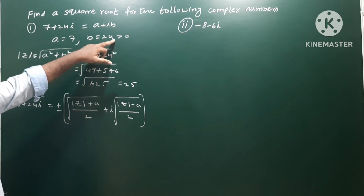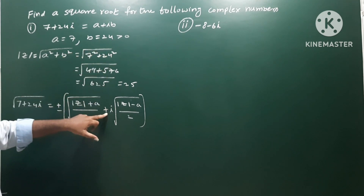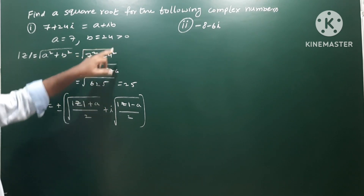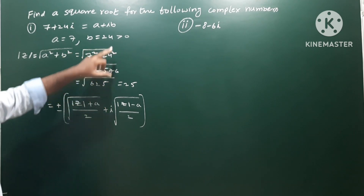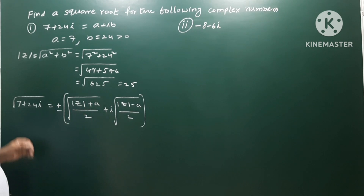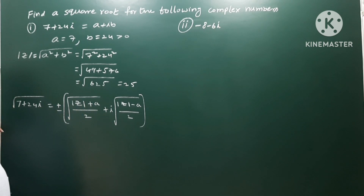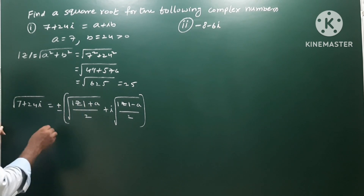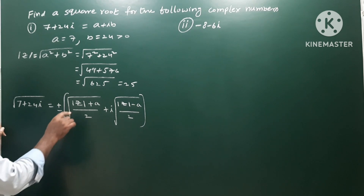When the imaginary part is negative, the real part stays positive but the imaginary part becomes minus. That is the only difference between the two cases in the square root formula.